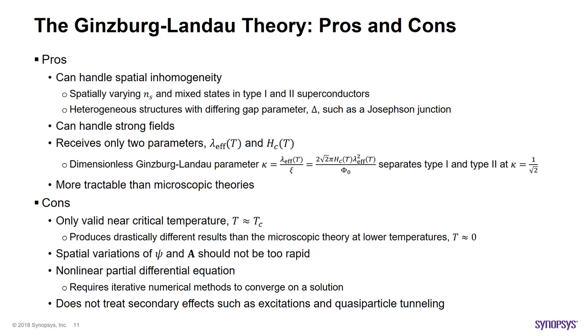Let's recap what we have learned about the Ginzberg-Landau theory and consider its pros and cons for TCAD applications. The main strength of the theory is that it can treat spatial inhomogeneity, which could either mean varying superconducting carrier density or mixed states, as well as structures comprised of different materials. This theory is also capable of including fields into the formulation via the vector potential. It receives two parameters compared to a single parameter in the London theory, which means that it's more general than London equations. And even though more complicated than London equations, it is still by far more tractable compared to the microscopic theories.